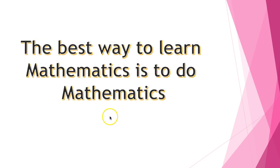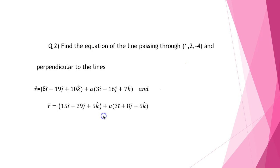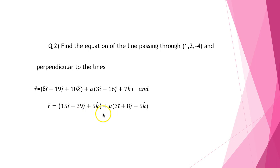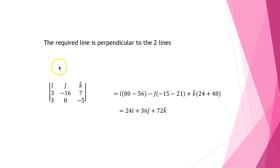The best way to learn mathematics is to do mathematics, so you need to practice these problems along with me and work until you master it. Find the equation of the line passing through (1, 2, −4) and perpendicular to the lines r = 8i − 19j + 10k + α(3i − 16j + 7k) and r = 15i + 29j + 5k + μ(3i + 8j − 5k). The required line will be perpendicular to these two lines.